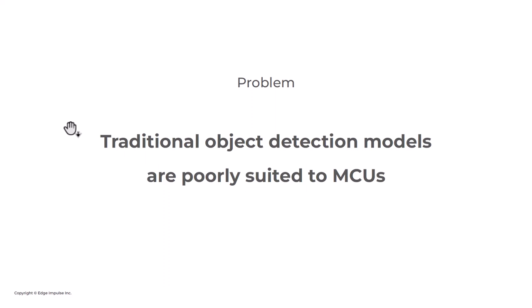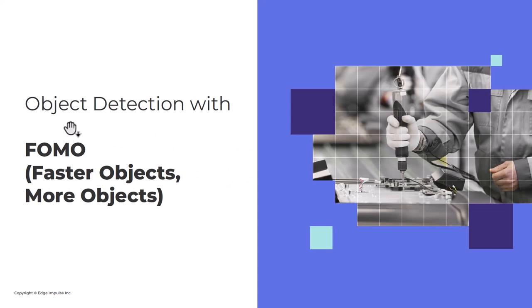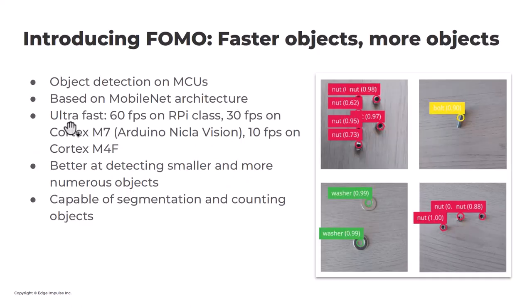One of the problems is that MobileNet V2 SSD is poorly suited for MCUs because of the RAM and the size of the models. So we came up with FOMO — Faster Objects More Objects. The main goal was to run on MCUs from the very beginning. We tried different approaches and it's still based on MobileNets, but you can change the backbone using our expert mode. It's super fast — on Raspberry Pi we can achieve around 60 frames per second, and 30 frames per second on Cortex.